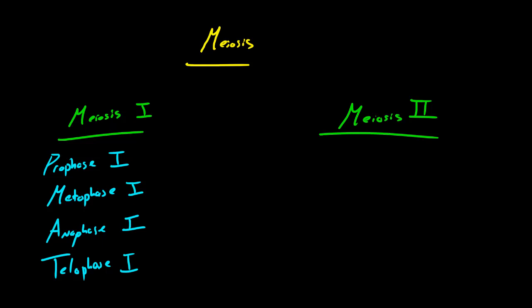So once it's done experiencing telophase I, what it does is it hops over to meiosis II, and then it kind of goes through the cycle again, but in a different kind of way. So it goes to prophase II, metaphase II, anaphase II, and telophase II.